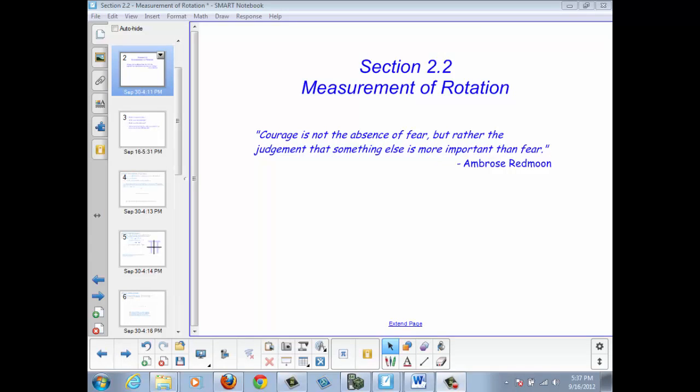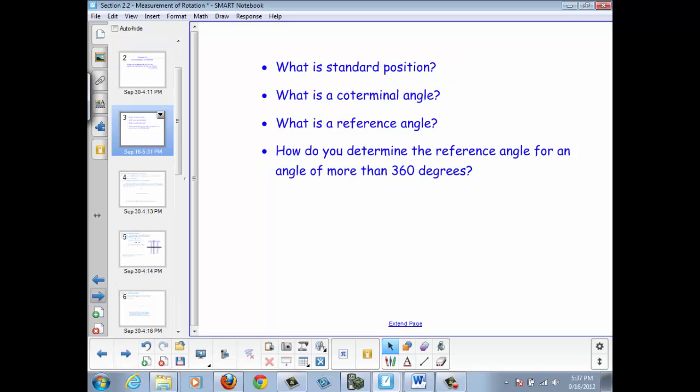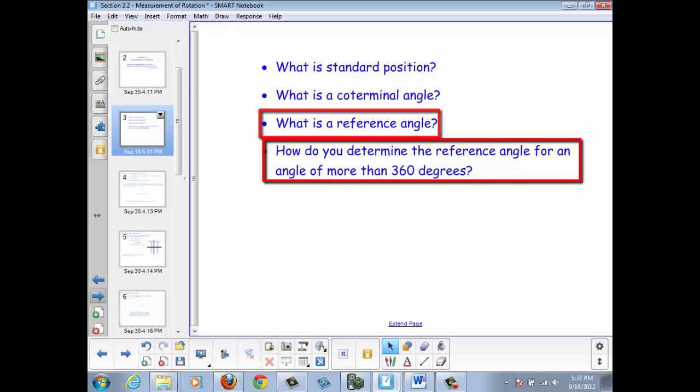Welcome to Section 2.2, Measurement of Rotation. In this section, we're going to be looking at three main topics: What is the standard position of an angle? What is a coterminal angle? And what is a reference angle? We'll also look at an example of how to determine the reference angle for an angle of more than 360 degrees.